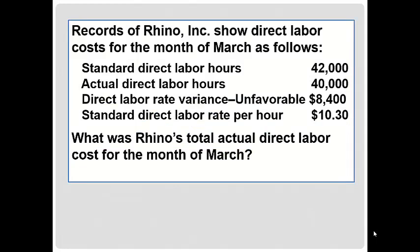Standard direct labor hours 42,000. Actual direct labor hours 40,000. Direct labor rate variance unfavorable $8,400. Standard direct labor rate per hour $10.30. And the question is, what was Rhino's total actual direct labor cost for the month of March?